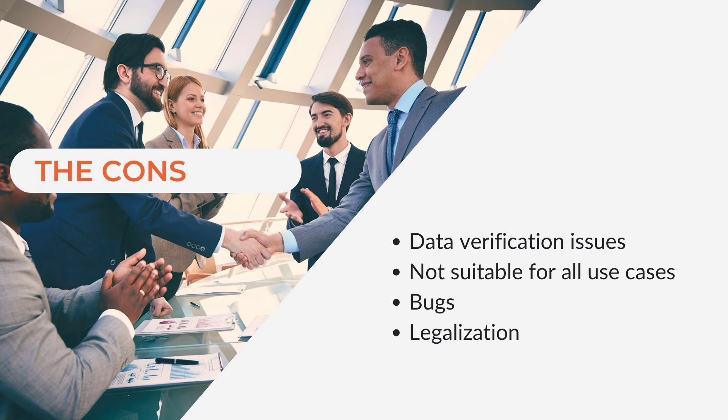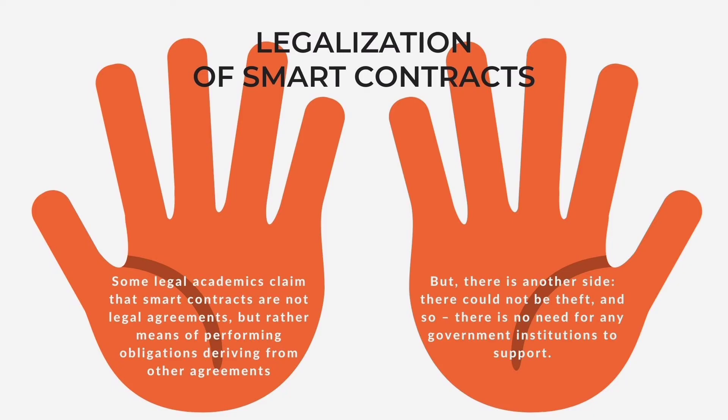Last but not least is legalization. On one hand, some legal academics claim that smart contracts are not legal agreements, but rather means of performing obligations deriving from other agreements. But on the other hand, there could not be theft at all, as the system guarantees every party is not cheating — so there is no need for government institutions to support it.